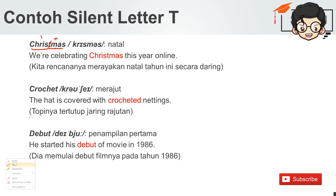Contoh berikutnya: 'crochet' — hampir seperti ballet tadi, kita tidak perlu ucapkan T-nya di akhir kata. The head is covered with the crocheted knitting. Topinya tertutup jaring rajutan. Contoh lain lagi, T yang berada di akhir kata: 'debut' — penampilan pertama. He started his debut in a movie in 1986. Dia memulai debut filmnya pada tahun 1986.